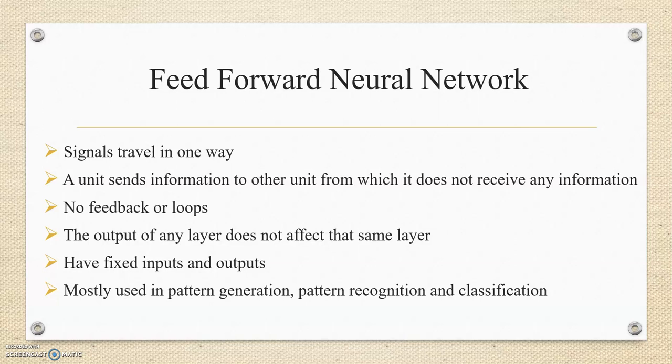Feed Forward Neural Networks are straightforward that associate inputs with outputs. They have fixed values of inputs and outputs. They are mostly used in pattern regeneration, pattern recognition, and classification.